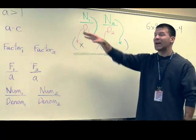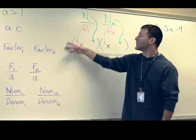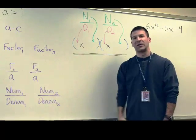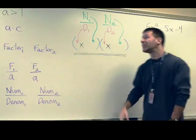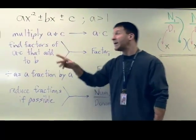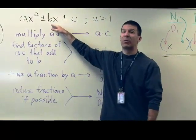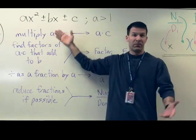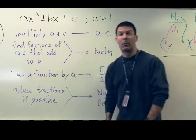Just make sure if you do have a GCF from the start that that goes in front of the first quantity and follows along. Other than that, works like a charm. If you cannot find any factors of your a times c that add to your middle, then you would say that the trinomial is prime and cannot be factored. No big deal. But that's all you have to watch out for.